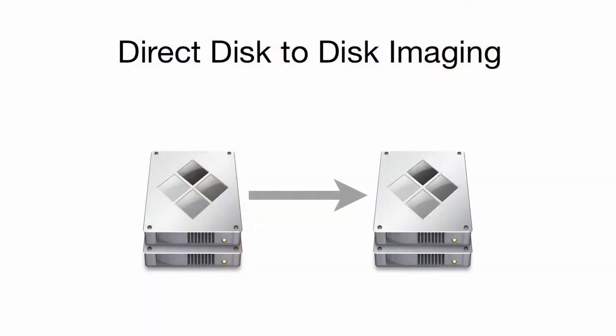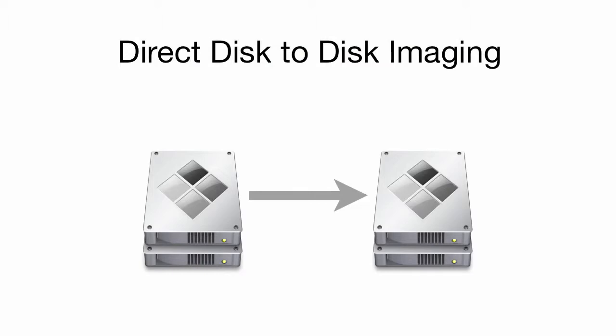Another new feature is the ability to migrate your Bootcamp partition directly from one disk to another. If you put a Mac into target disk mode and plug it into another Mac, you can quickly and easily migrate that Bootcamp partition. Both Thunderbolt and FireWire are supported for target disk mode. This also works if you have a Bootcamp partition on a hard drive in an external hard drive enclosure. And it is fast — crazy fast.